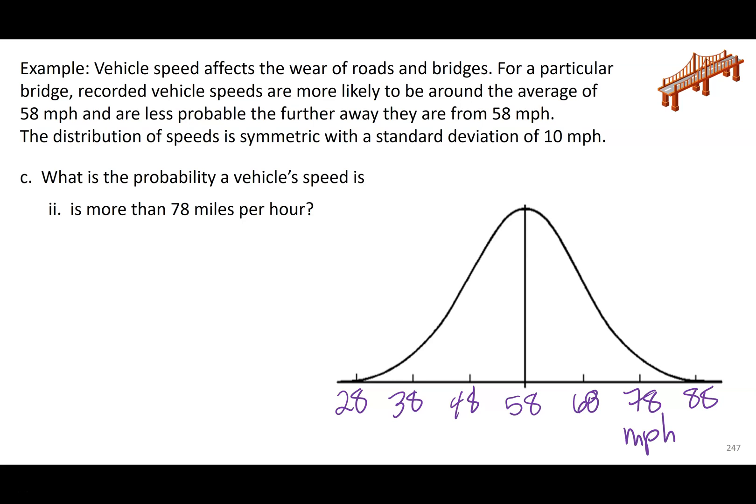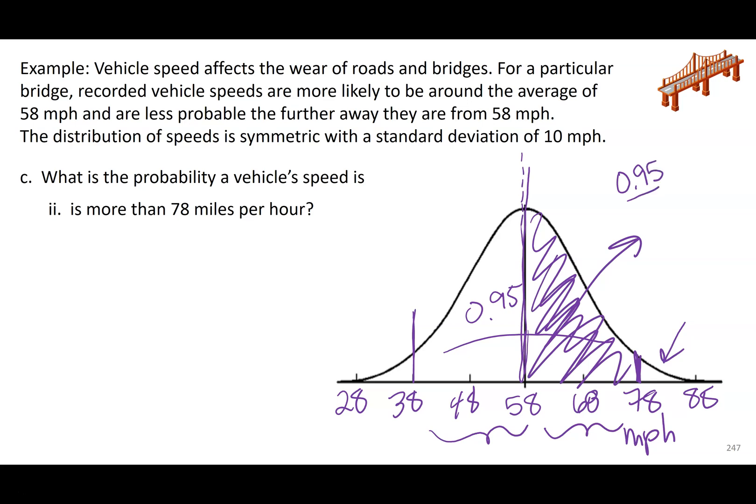So what is the probability we randomly select a vehicle and it's going more than 78 miles per hour? So I'm going to draw my line at 78 miles per hour. So if I were looking between 38 and 78, that's two standard deviations. So this would be like the middle 95 percent. But if I cut down in half, and you're only allowed to cut in half down the middle, you're not allowed to cut down in half like over here or anywhere else, only down the middle. Just this part right here, so just this shaded part. I could describe this as 0.95 over 2. That's going to be 0.475.